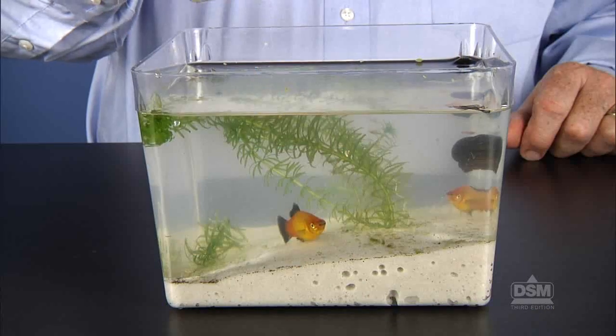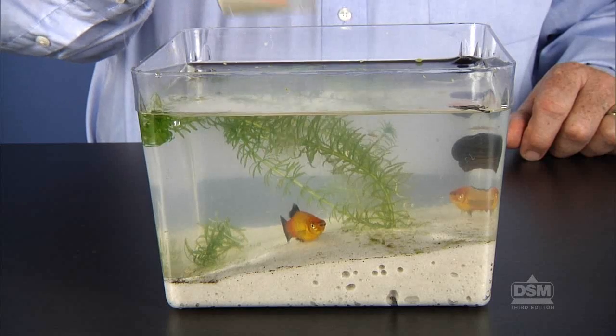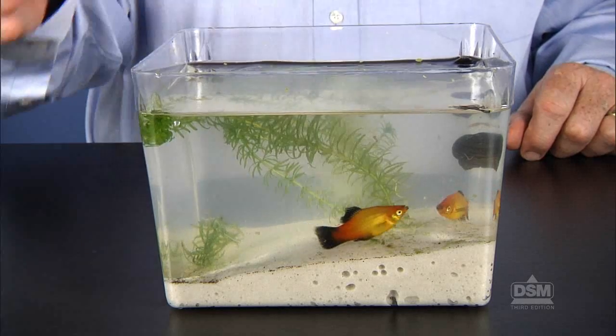Then, guide the students to slowly sprinkle a small amount of sand in the middle of the tank. Again, the fish should move away from the disturbance.